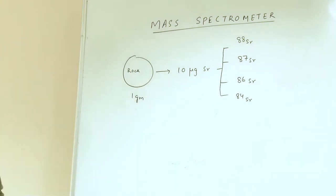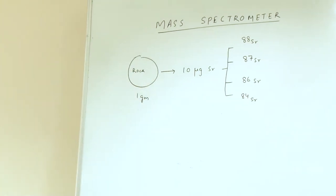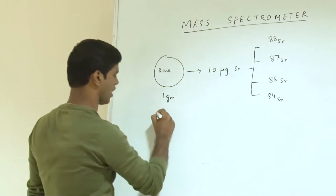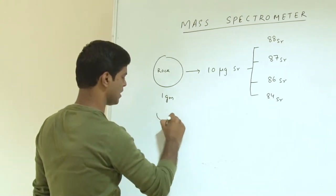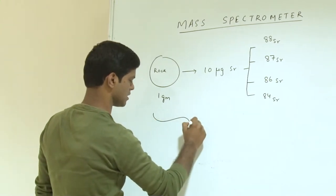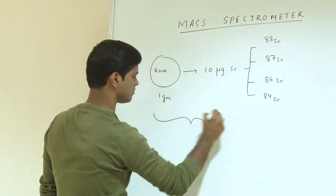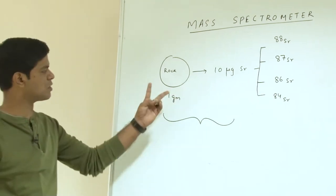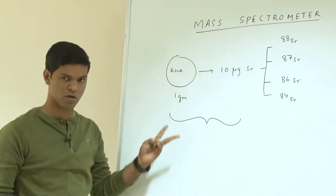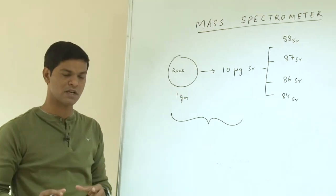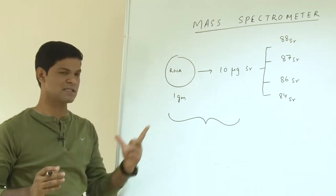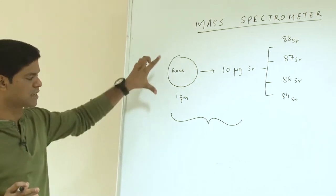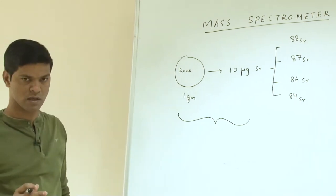Now, strontium is an element and it has 4 naturally occurring isotopes. This strontium will have 4 different isotopes with masses like 88Sr, 87Sr, 86Sr, and 84Sr. These are the 4 naturally occurring isotopes. If you are interested to find this elemental concentration, which tells you that there is 10 microgram of strontium in 1 gram of rock - which effectively means 10 ppm of strontium is there in the rock.